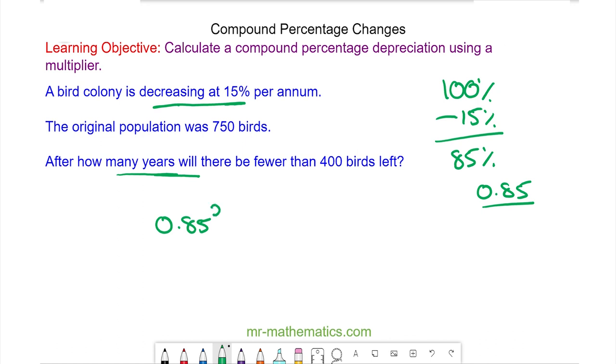So we're going to call this x and it is that multiplied by the original number of birds which is 750. And there has to be fewer than 400 birds left so this has to be less than 400.